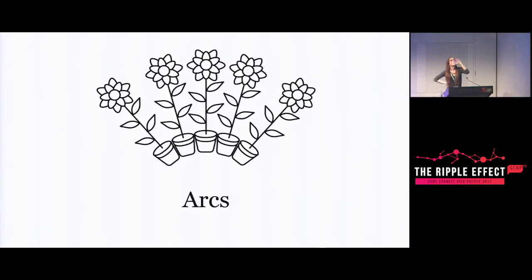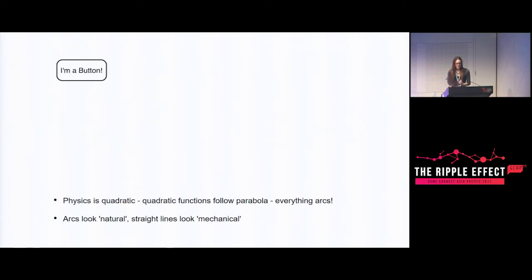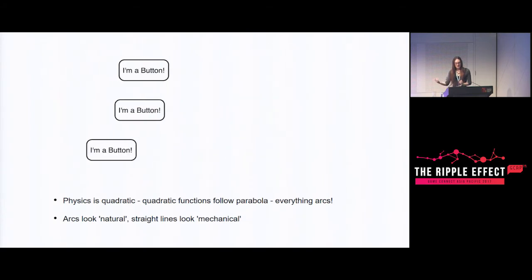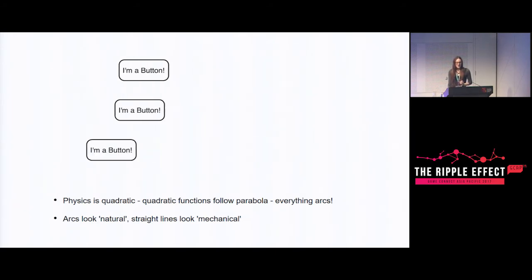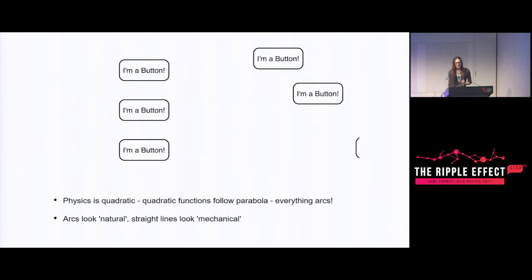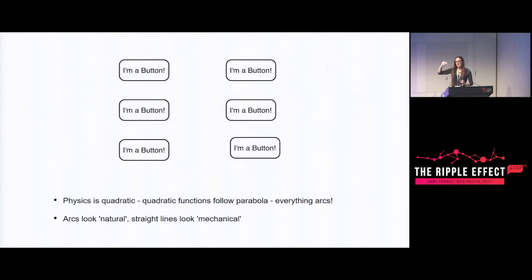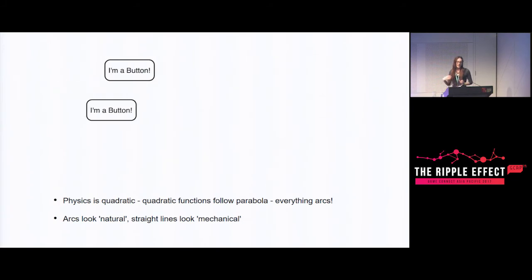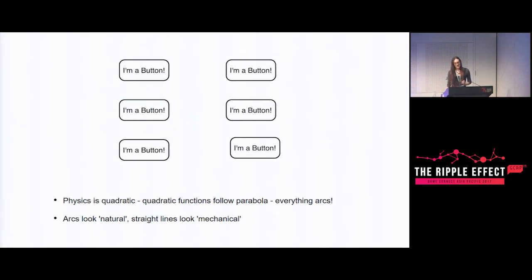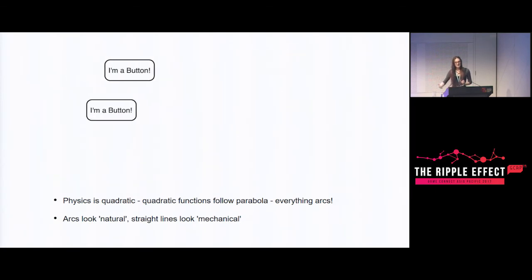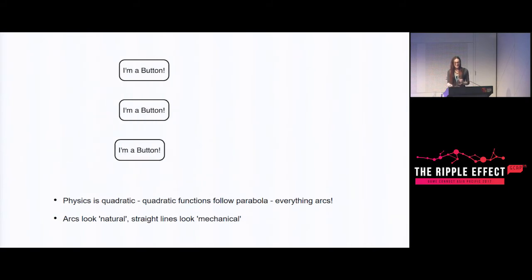Alright, arcs. This follows on from the calculus thread - as we said, physics is quadratic, quadratic functions are parabolas. In general, everything arcs. Anything affected by gravity will have an arc to its motion. Because of this, moving in an arc rather than just a line - even when using easing - having that little extra hop to it can just make everything feel more lively, nice, and organic. Even if it's very subtle, adding that kind of pizzazz is good.